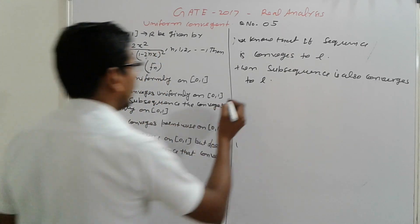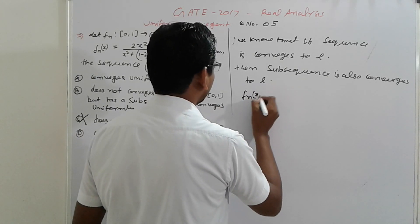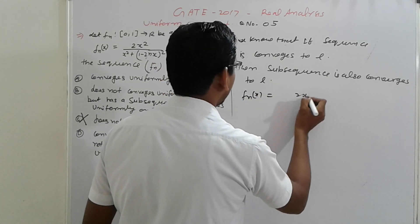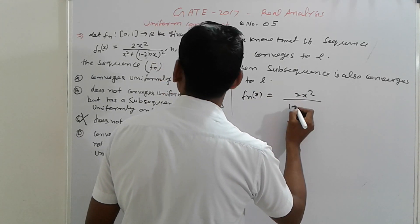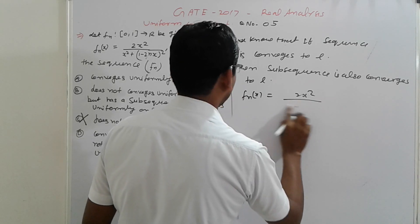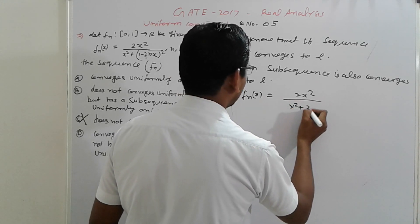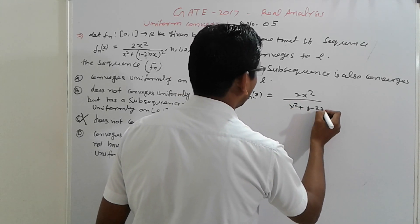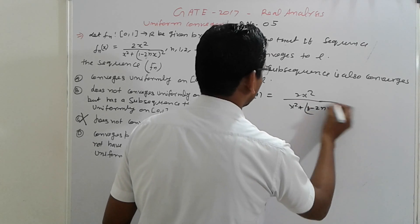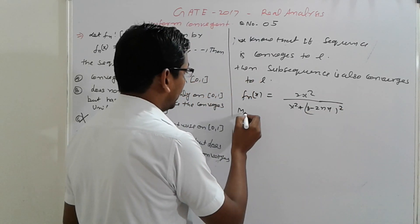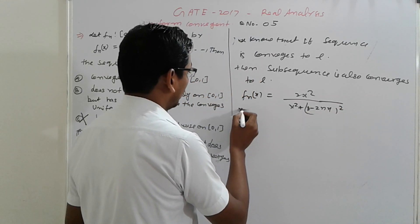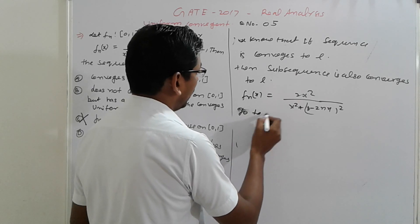So simply here is given f_1(x) is given 2x² upon (x² + 1 - 2nx)². So go to by, go to MN test.